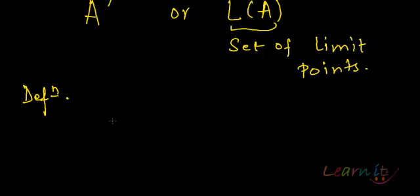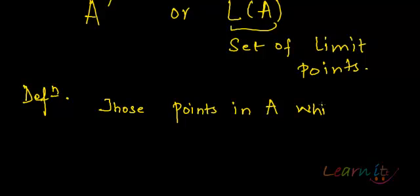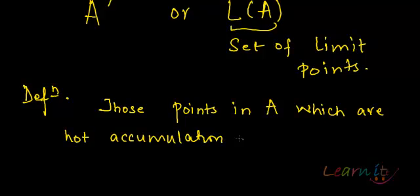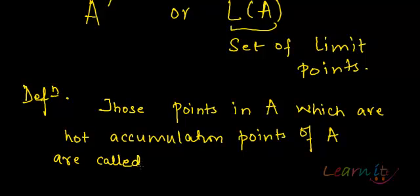The definition says that those points in A which are not accumulation points of A are called isolated points of A.